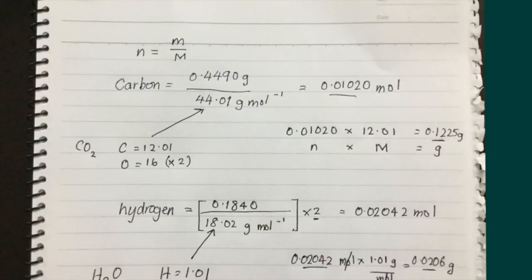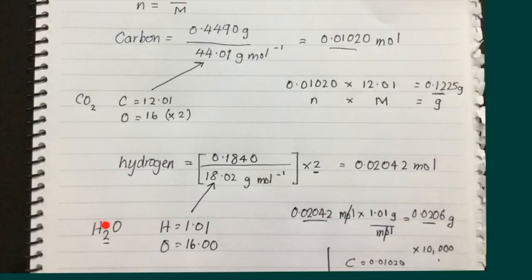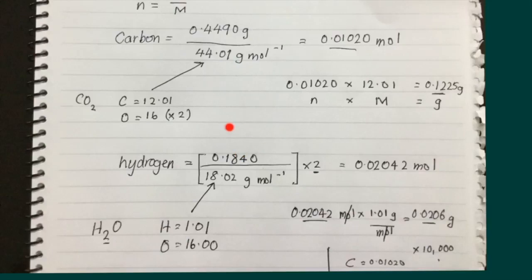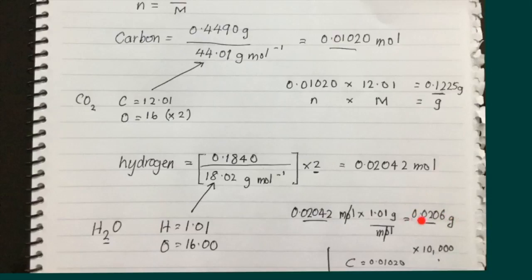This gives 0.1225 grams for the amount of carbon in the sample. A similar approach follows for hydrogen, but there are two moles of hydrogen in one mole of water. So you divide the mass of water formed by the molar mass of water and multiply by two, because there are two moles of hydrogen per mole of water. Multiplying the resulting moles by the molar mass of hydrogen gives the mass of hydrogen in the sample.